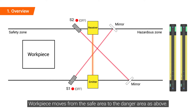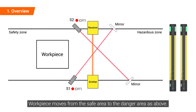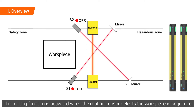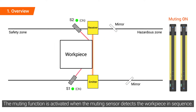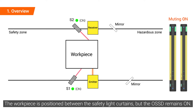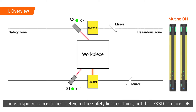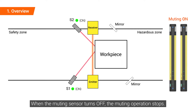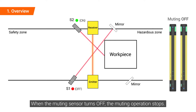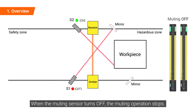The workpiece moves from the safe area to the danger area. The muting function is activated when the muting sensor detects the workpiece in sequence. The workpiece is positioned between the safety light curtains, but the OSSD remains on. When the muting sensor turns off, the muting operation stops.